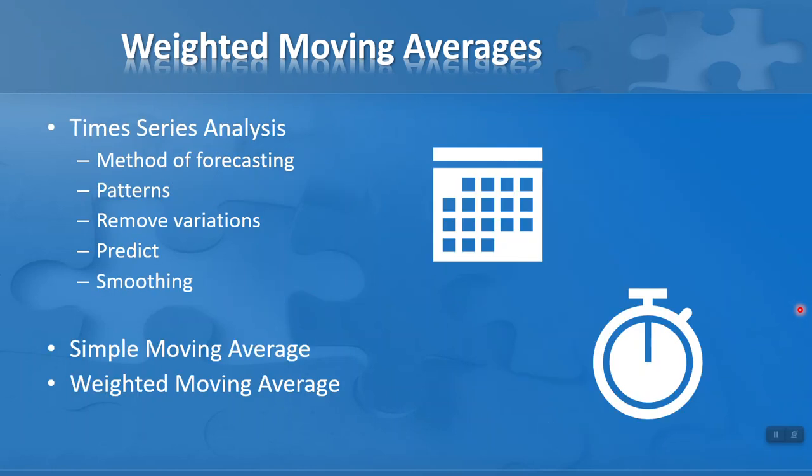So what is a weighted moving average? It's a simple time series analysis method of forecasting. It helps us look at patterns over a period of time. Time series analysis, as the name suggests, involves analyzing data over a time period. It helps us remove variations, make predictions, and is very useful at smoothing. There are two types: simple and weighted moving average.